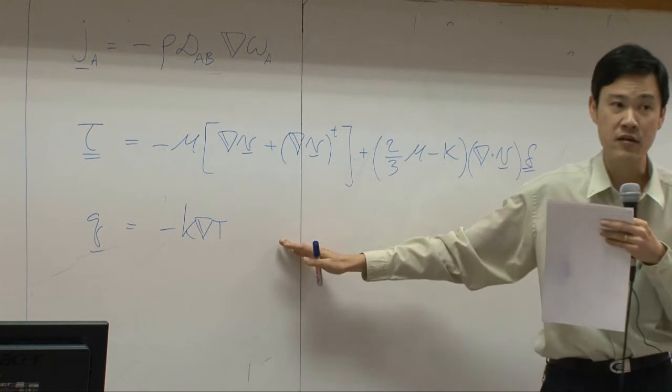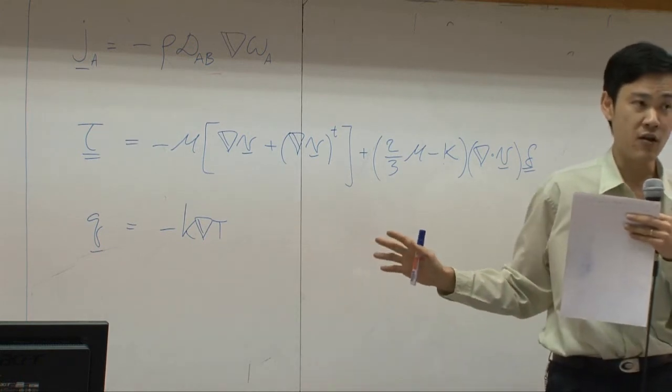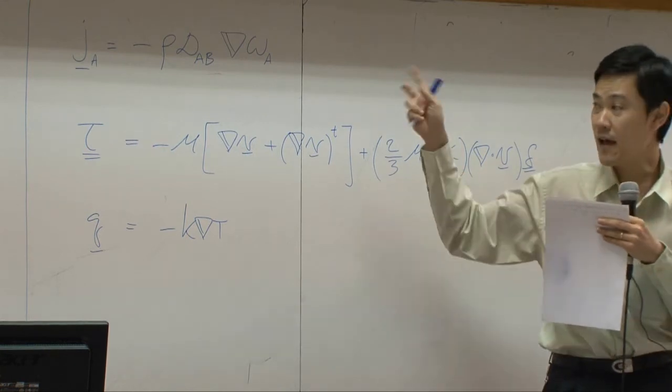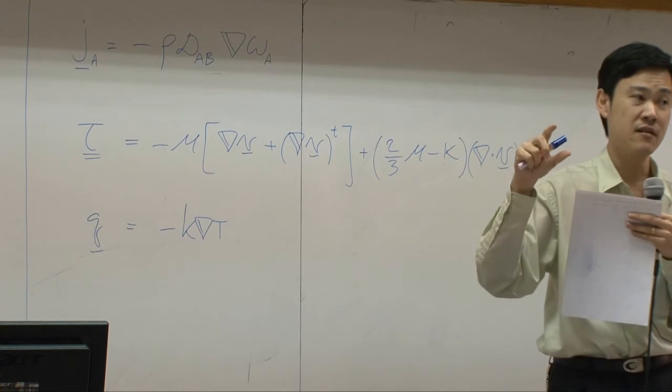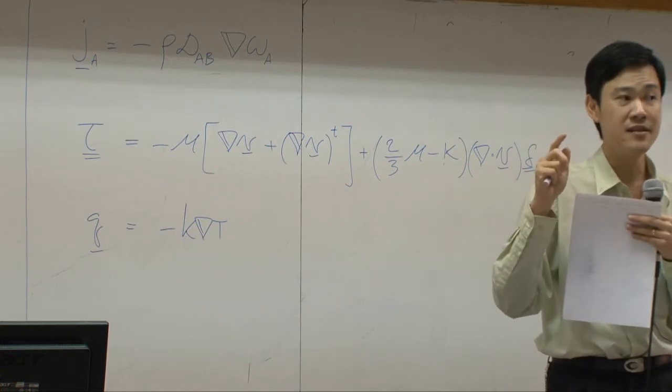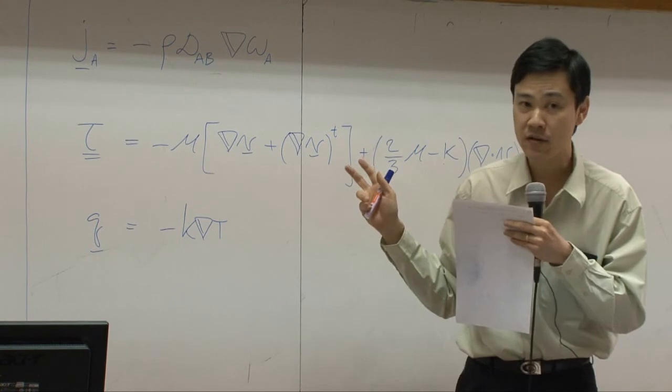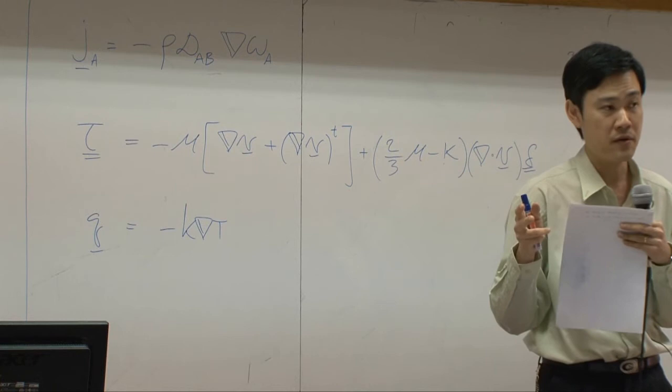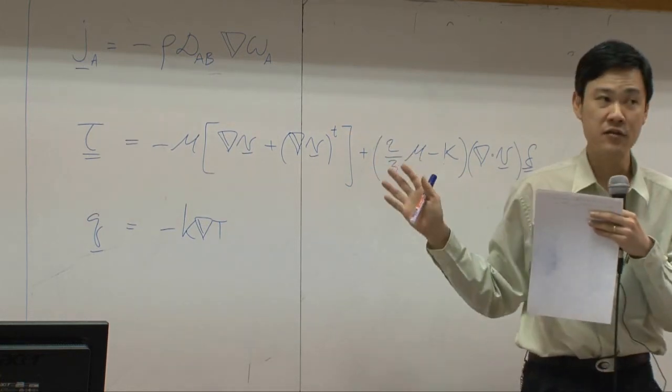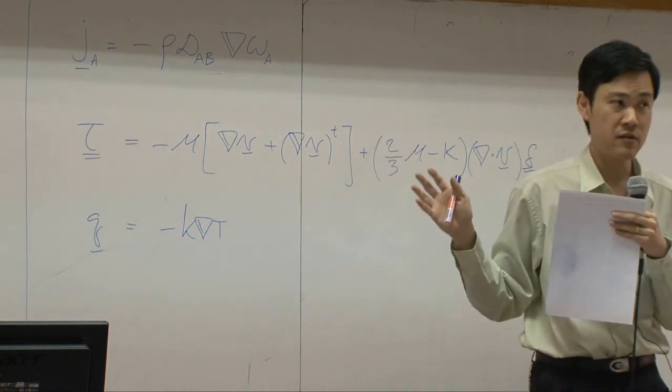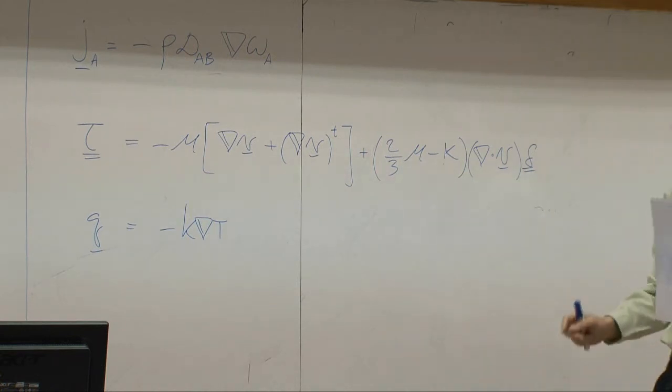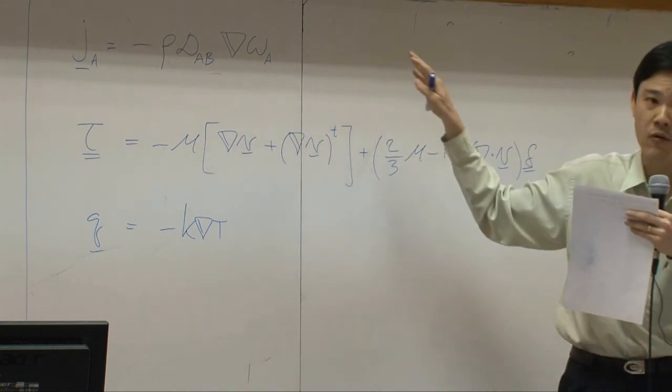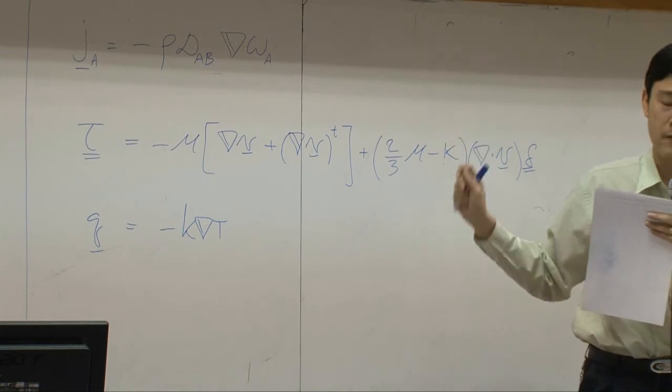All these three equations were obtained based on experimental observation. Every equation here was obtained from setting some simple system and then see which factors affect the flux and then try to correlate it into an equation. Again, all of this has nothing to do with theory. It's just experimental observation. Particularly for this one, for mass, it is applicable only for binary system.